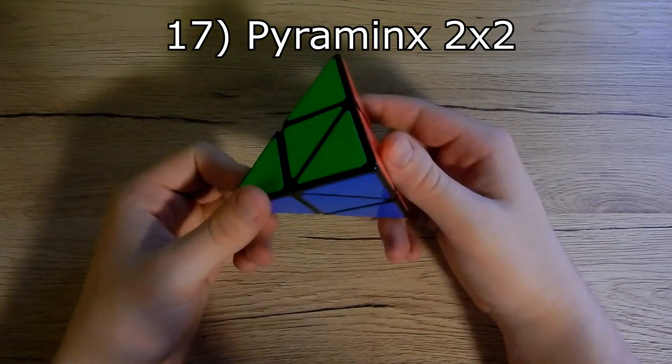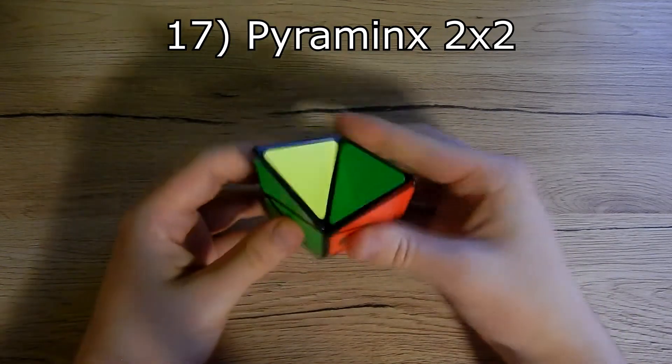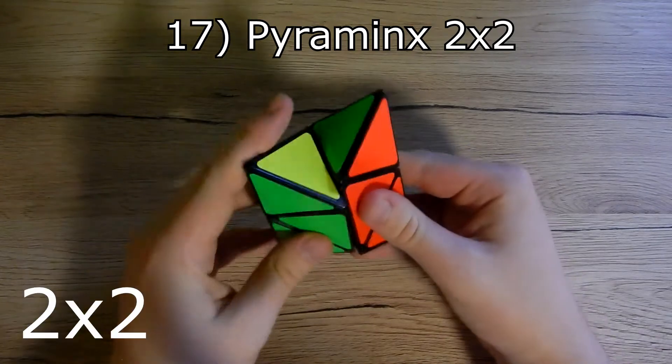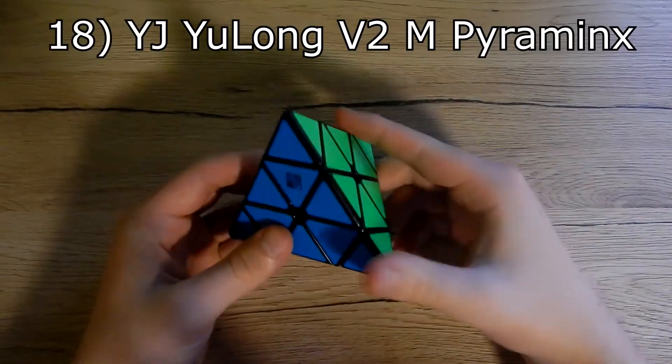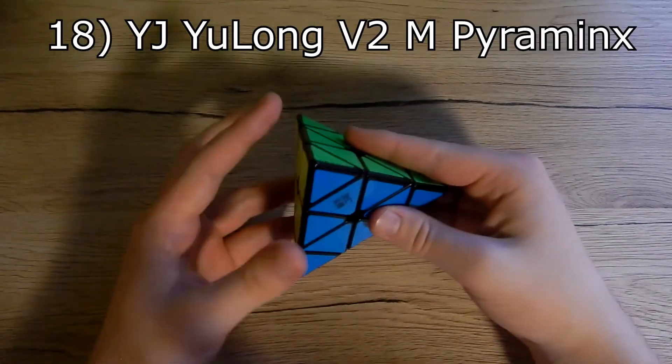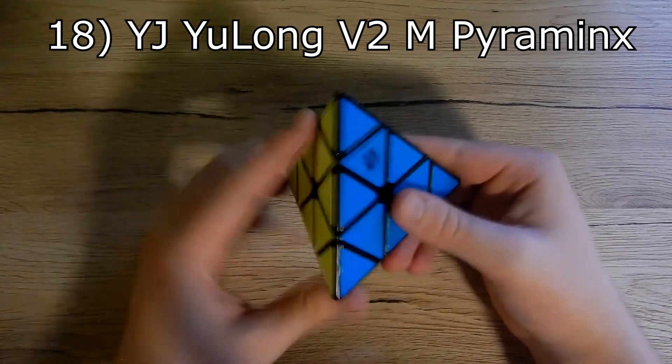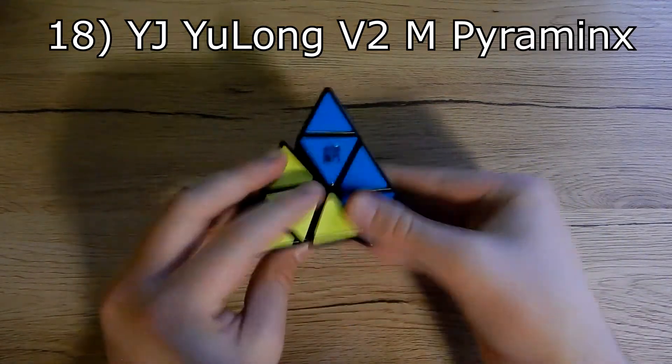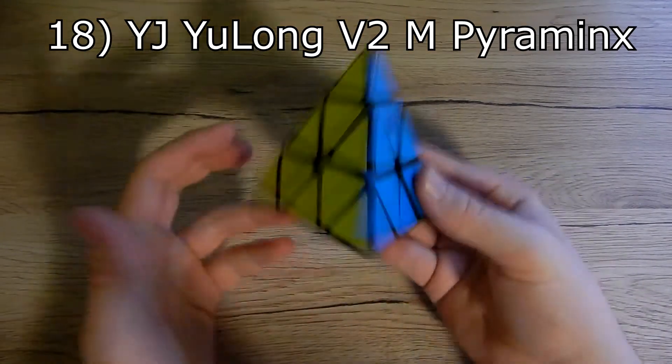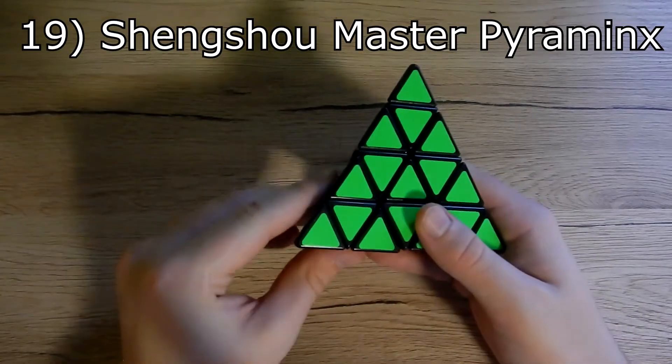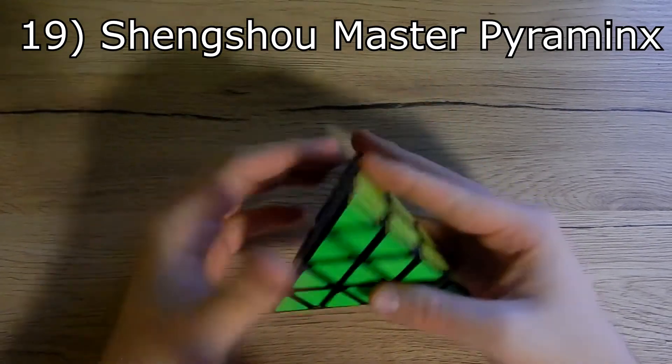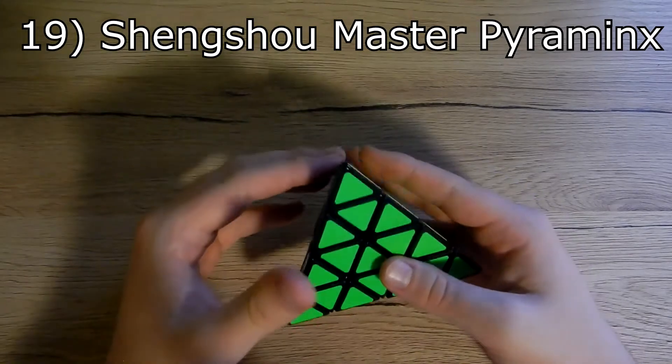Next we have Pyraminxes. First, 2x2 Pyraminx which has nothing to do with Pyraminx except the shape, because it turns like normal Pyraminx. Next we have YJ long V2M Pyraminx, and it's very great turning Pyraminx with magnets.